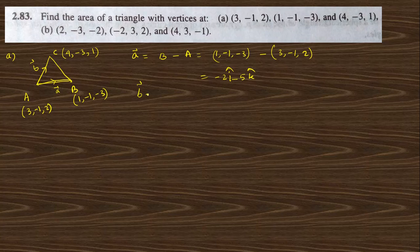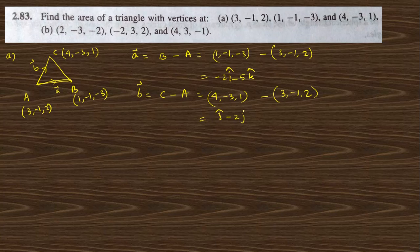Similarly, vector b is AC, which is C minus A. So: (4−3, −3−(−1), 1−2) = (1, −2, −1). This gives us vector b = i cap − 2j cap − k cap. Now that we know vectors a and b, we can find the area of the triangle.